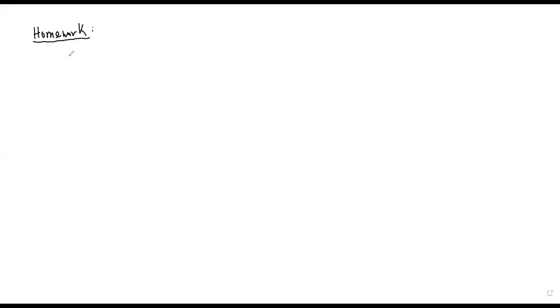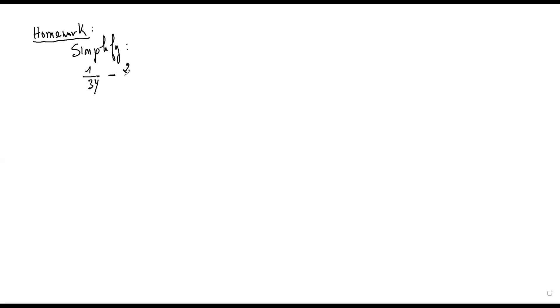W squared. The question is to simplify — evaluate each fraction. One over three y, minus two over five y. Okay, they asked you to evaluate the expression quickly.